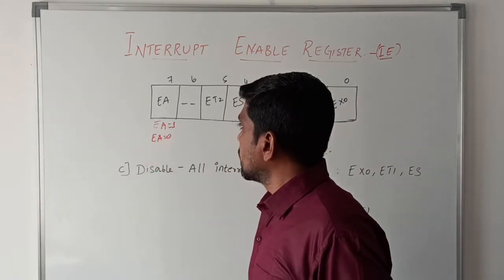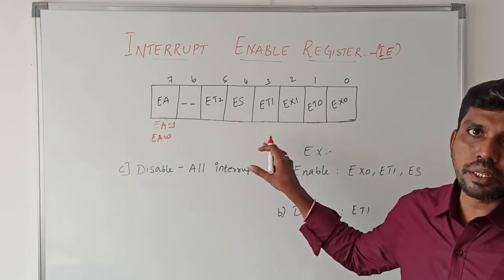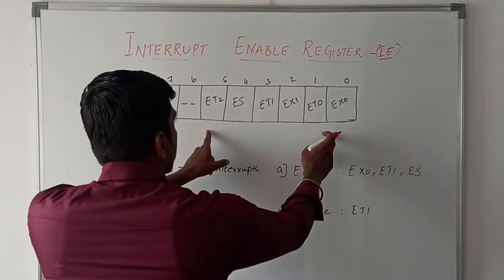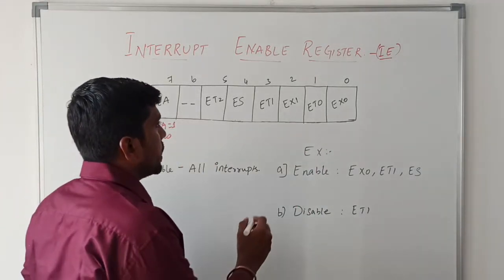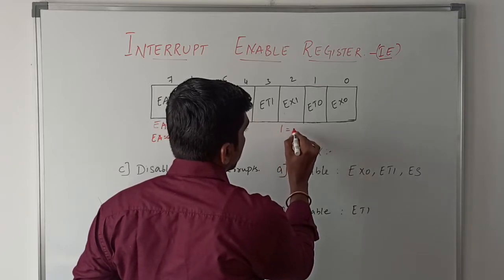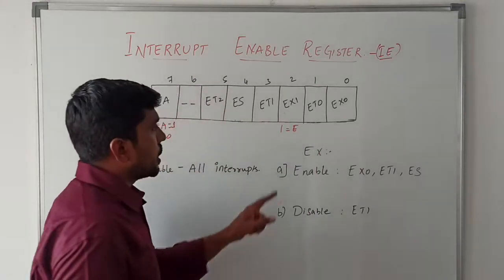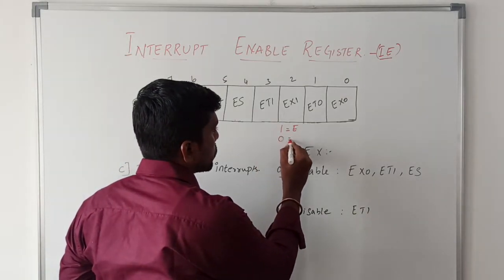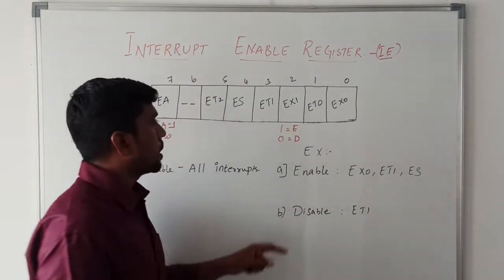Suppose in these six interrupts if you want to enable any one of the interrupts, that bit should be set to one. If this bit is one, the corresponding interrupt is enabled. Suppose this bit goes to zero, the corresponding interrupt is disabled.